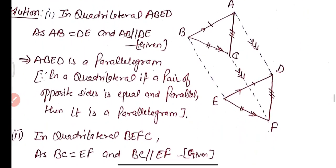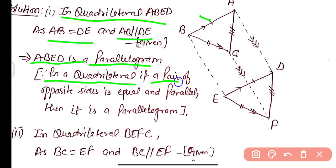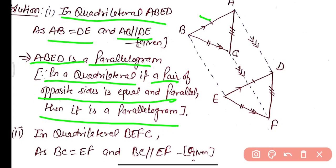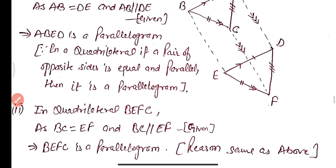Part 1: In quadrilateral ABED, we are given AB equals DE and AB is parallel to DE. Since one pair of opposite sides is equal and parallel, ABED is a parallelogram.